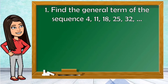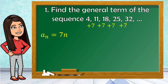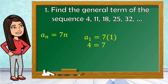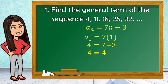Let's have this example: find the general term of the sequence 4, 11, 18, 25, 32. The pattern here is adding 7 to the previous term to get the next term. So we have a sub n is equal to 7n. Using the first term, a sub 1 is equal to 7 times 1, which is 7. But a sub 1 is 4. So we need to subtract 3 from 7 to get 4. Meaning, a sub n is equal to 7n minus 3.